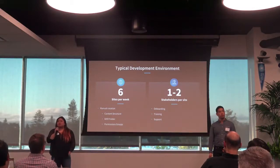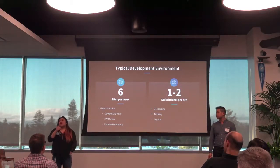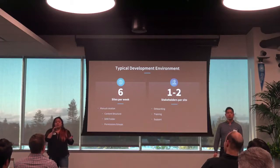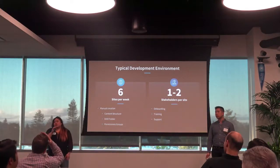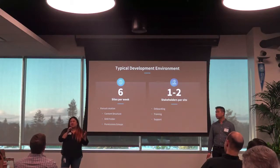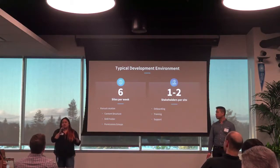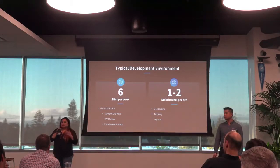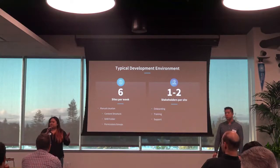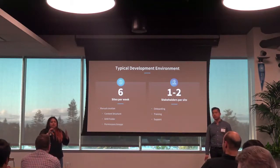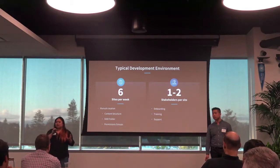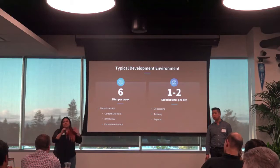When we first started, it was somewhat manageable. We were doing about six sites a week — we'd get a request and create them. At that point, everything had a manual creation process: create the site by hand or copy it, create a DAM folder, and set up separate permissions groups. We were also supporting one to two stakeholders per site. Onboarding often took about 15 to 20 minutes, training was a once-a-week 45-minute session, and there were always support questions.